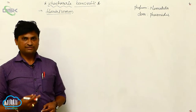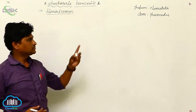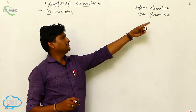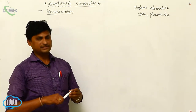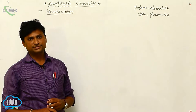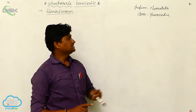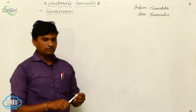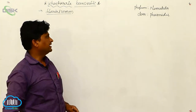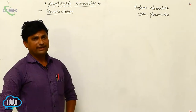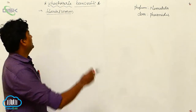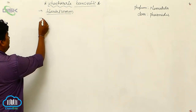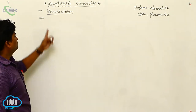Nematoda classification is divided into two classes: one is Phasmidia, and the second one is Aphasmidia. Phasmidia means chemoreceptors which are present near the mouth. That's why we call it Phasmidia. Nematoda means roundworms. Under the class Phasmidia, we normally call this the filarial worm.